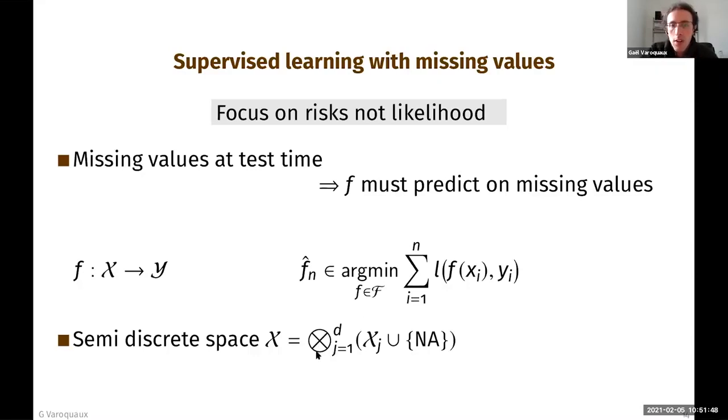And sorry for the typos and notation, this doesn't really make sense. And so the semi-discrete space is going to pose problems simply because it's harder to optimize on this semi-discrete space, and we're going to easily fall into combinatorial optimization problems. That's one of the set of problems that we fall into.